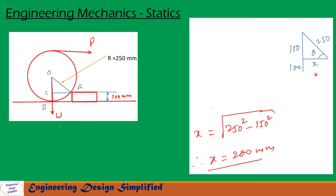So from this right angle triangle, X can be found as X equal to square root of 250 square minus 150 square. So after simplification we get X equal to 200 millimeter.